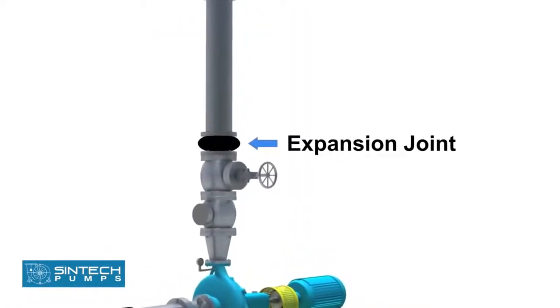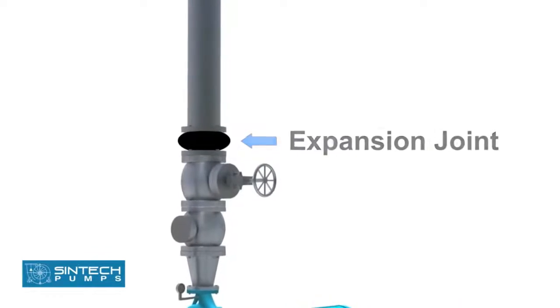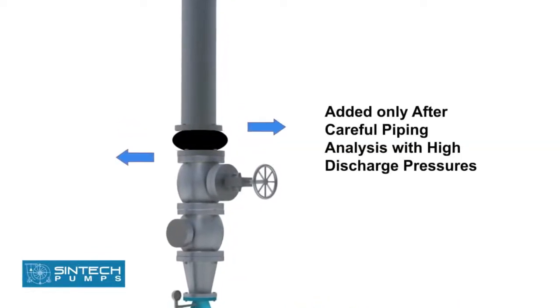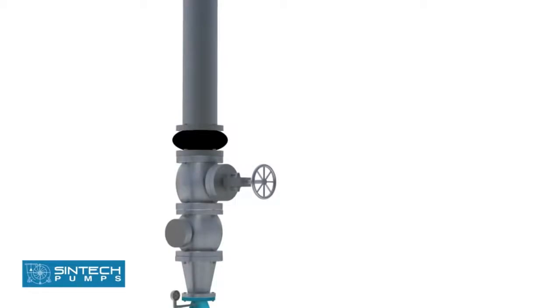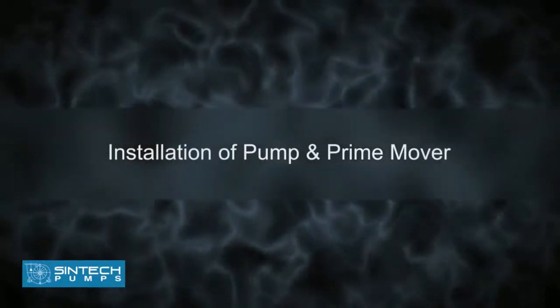Expansion joints may be used only after a careful piping analysis, especially when the discharge pressures are on the higher side. Installation of pump and prime mover.